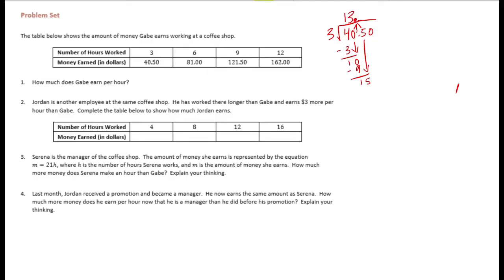3 goes into 15, 5 times. 5 times 3 is 15, bring down the 0, and 3 goes into 0, 0 times. So he makes $13.50 per hour.